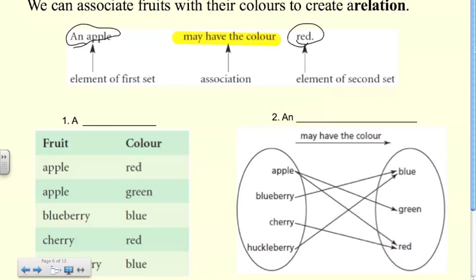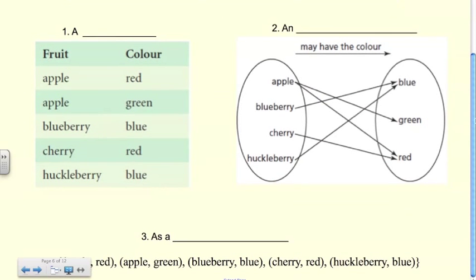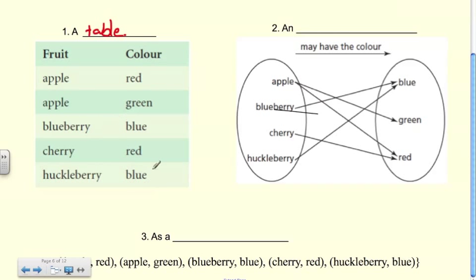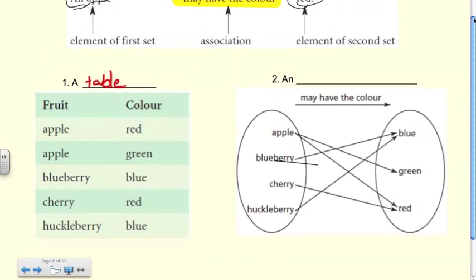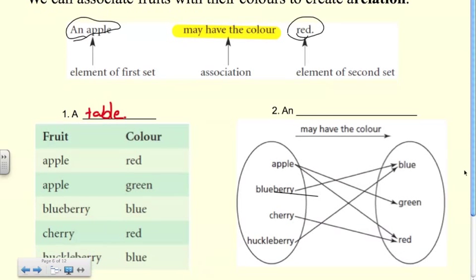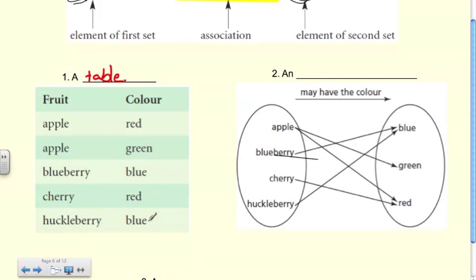There are a few ways to represent relations between sets of data. We can use a table. Tables are straightforward — we have the first set of elements on the left and the second set on the right. So fruits on the left and colors on the right. Apple may have the color red; apple may also have the color green, so because apple has two associations we write it twice. Blueberry may have the color blue, cherry may have the color red, and huckleberry may have the color blue.